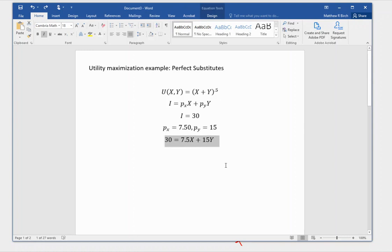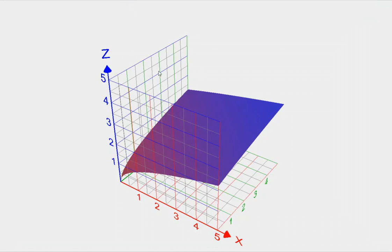There's our budget constraint in a nutshell with everything substituted in. We can solve for good y and we see that it's equal to 2 minus 0.5x. Now, we don't need to use calculus, even though we have a square root function here. We can do some intuition. When we have perfect substitutes, there's an exact trade-off.